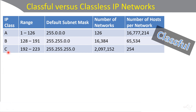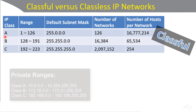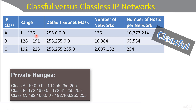In classful networks, each class gets a default subnet mask. The class A default subnet mask is 255.0.0.0. If you were on the class A 10 network, your default subnet mask would be 255.0.0.0. In class A, you can have 126 networks total, but you can have lots of hosts on each network — 16,777,214.